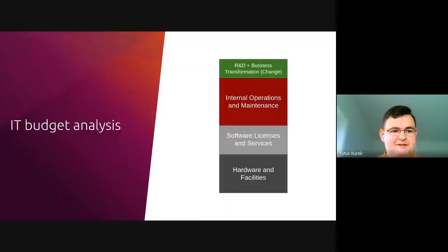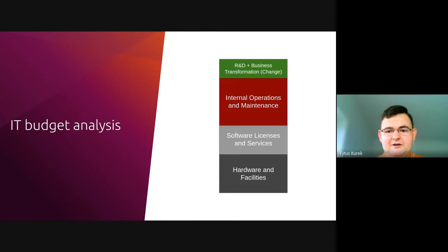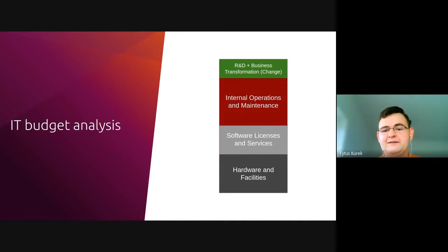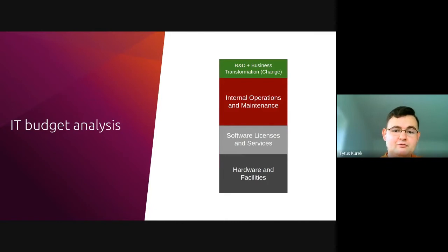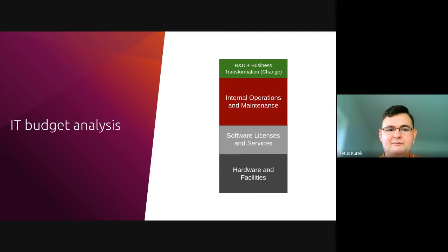So let's spend a couple of minutes making some short analysis of a typical IT budget. A typical IT budget consists of four primary pillars. The first one is hardware and facilities. Obviously, if you're about to run an infrastructure, it has to run on some hardware, and this hardware has to run in some data center. There is a cost associated with running all of those facilities — power, air conditioning, racks, cabling, and the hardware itself. This is a fixed cost that has to be planned carefully when preparing an IT budget.